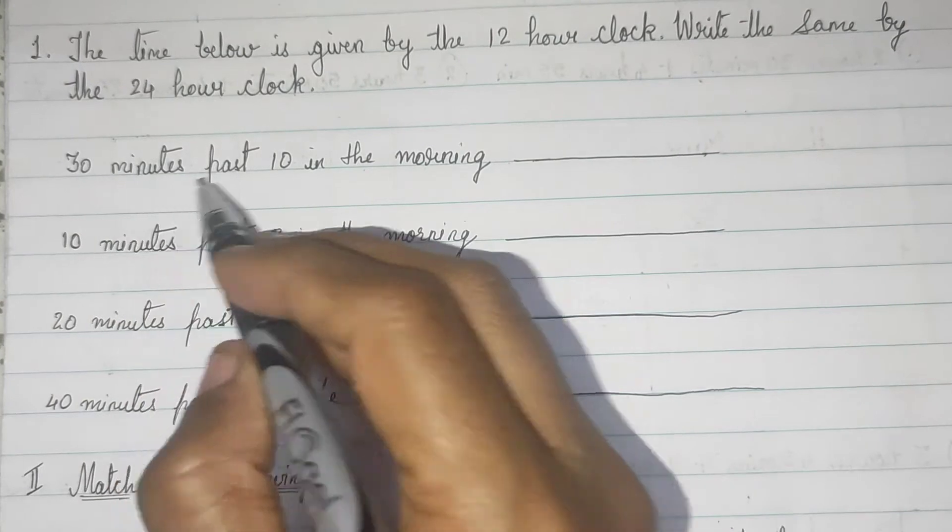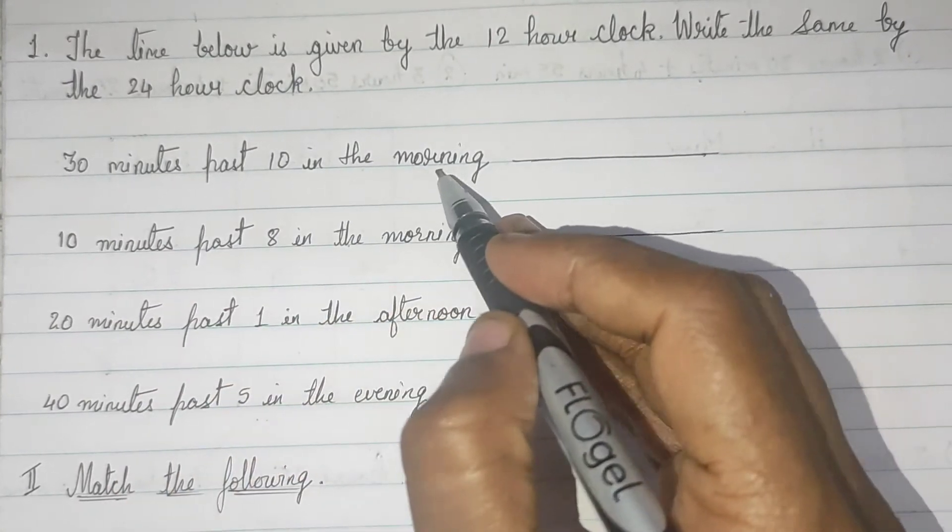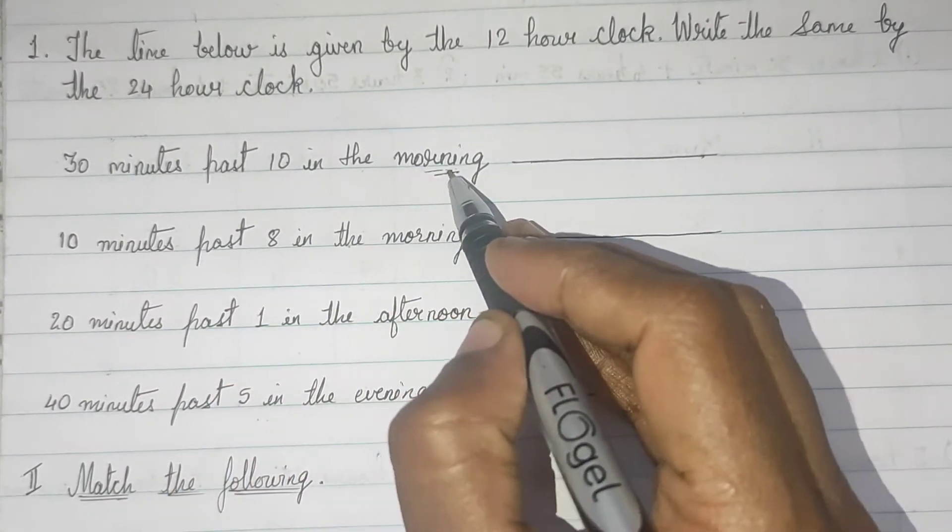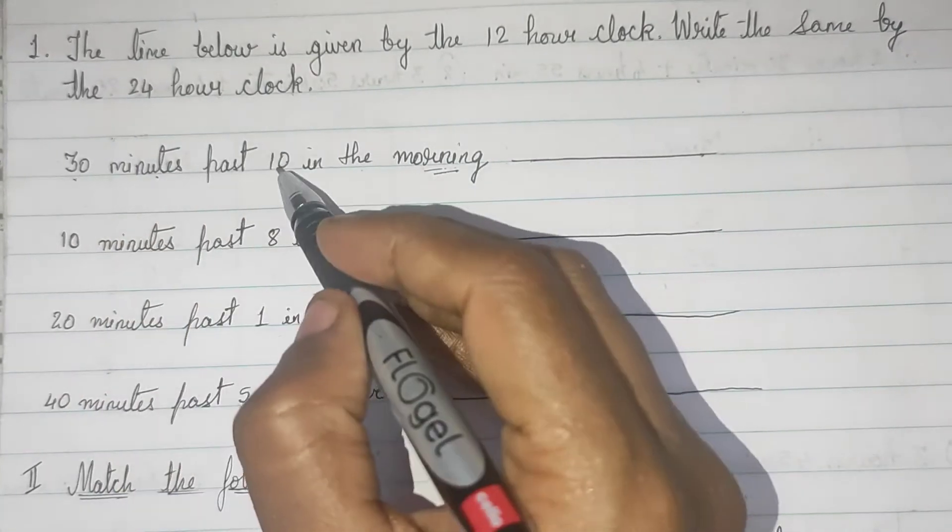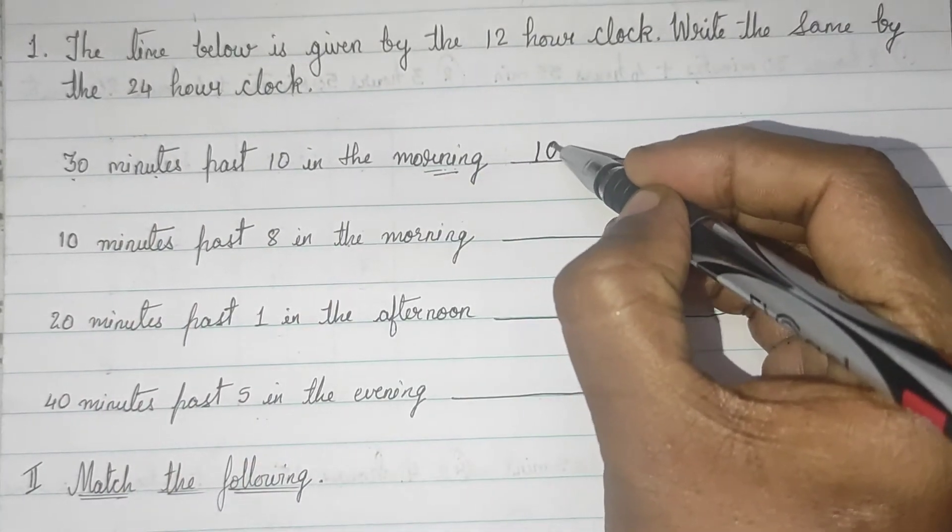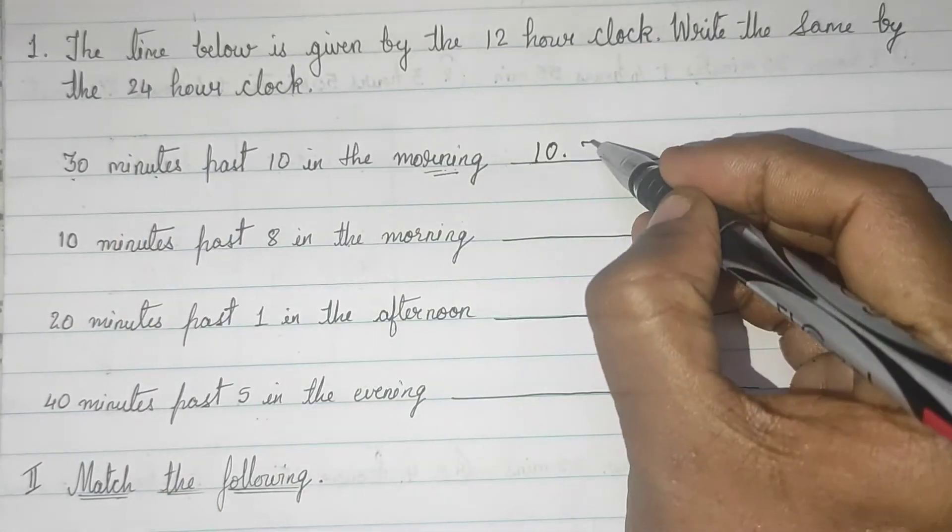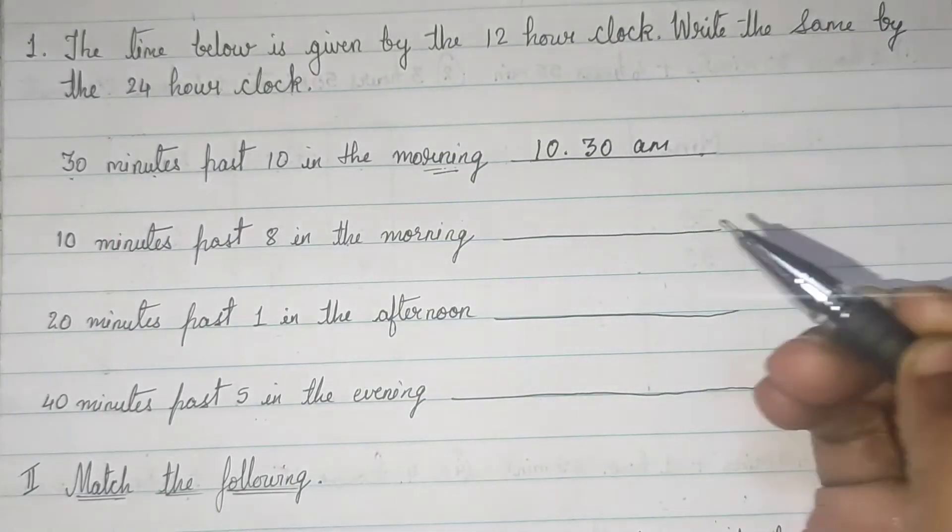First term, 30 minutes past 10 in the morning. See, this is very important. Morning means subha. So, 30 minutes past subha ka 10 bajke, 30 minutes. So, you have to write a.m.